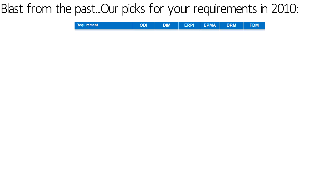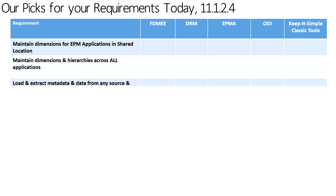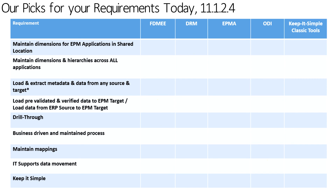Looking back from our 2010 recommendations to today, what are our picks for version 11.1.2.4? If you need to maintain dimensions and hierarchies in a common library for EPM applications only, DRM is absolutely the right solution. EPMA will technically do that as well for EPM applications only, but the key negative is that new Hyperion Planning features are not supported in EPMA-deployed applications. If you need to maintain dimensions, hierarchies, and master data across all of your applications and systems, DRM is the tool. If you need to load and extract metadata and data from any source or target, FDMEE is the solution.